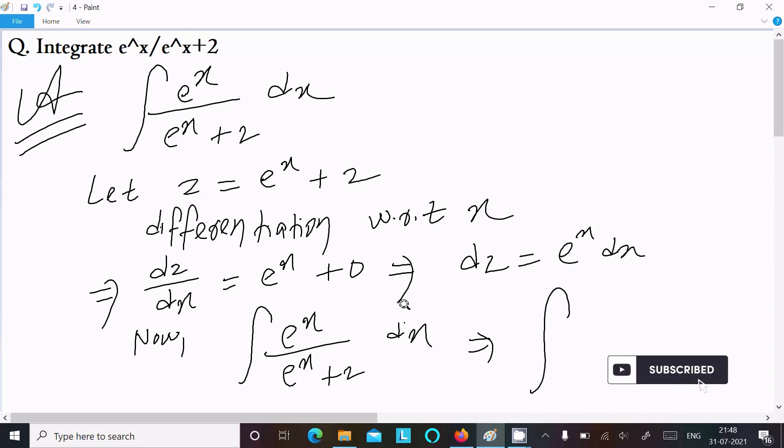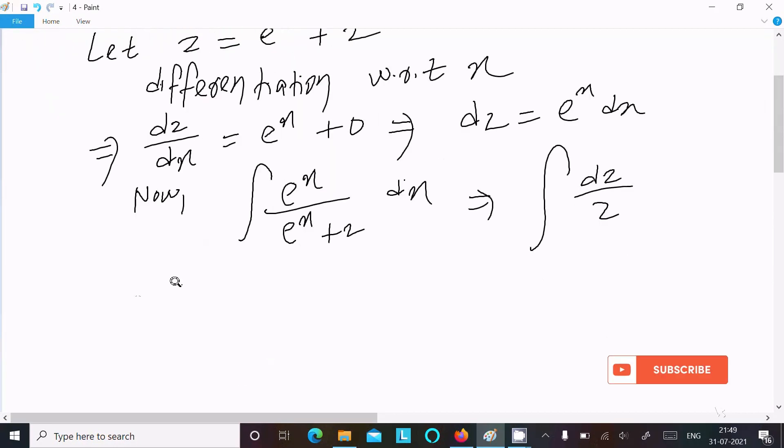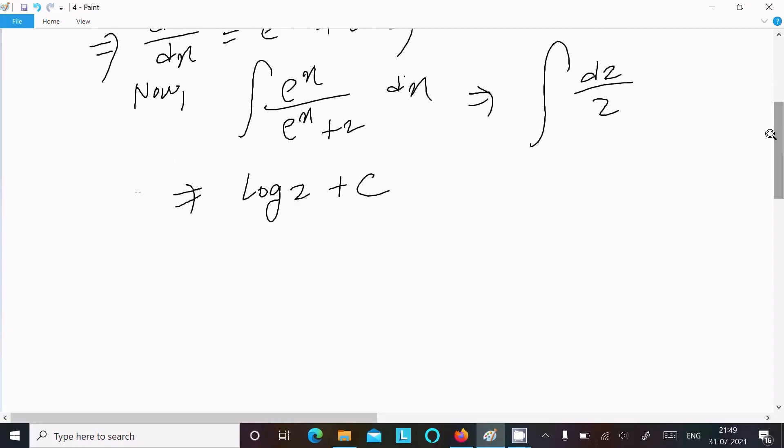Here e^x dx = dz and e^x + 2 = z, so the integration becomes ∫ 1/z dz, which equals log z + C, where C is the constant.